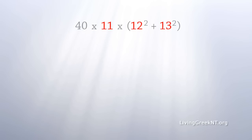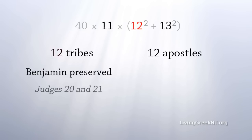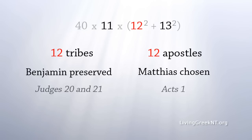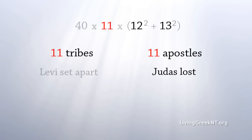There were 12 tribes of Israel, and there were 12 apostles in the New Testament. When the tribe of Benjamin was nearly wiped out, the Israelites contrived a way to ensure that all 12 tribes were preserved. When Judas was lost, the remaining 11 apostles had two possible replacements. They didn't take both — they cast lots, and only one was chosen. It was apparently important that the number of apostles was exactly 12. And 12 was temporarily reduced to 11 in the New Testament when Judas was lost, and in the case of Israel when the tribe of Levi was set apart for the Lord and received no inheritance of land.